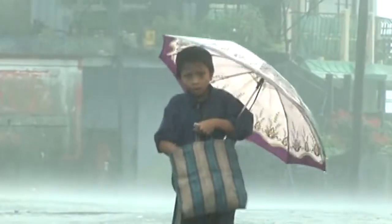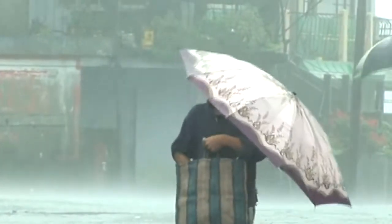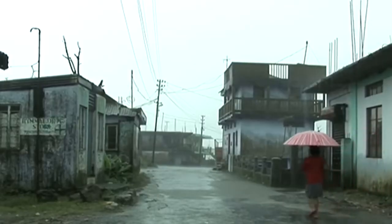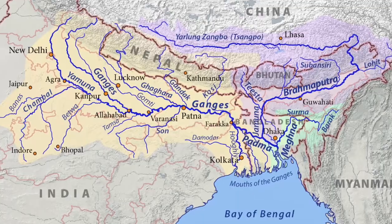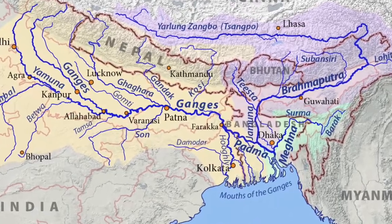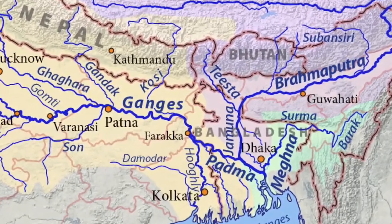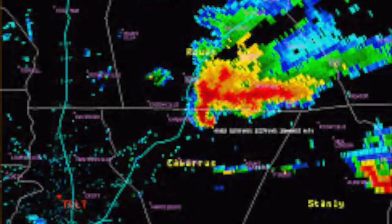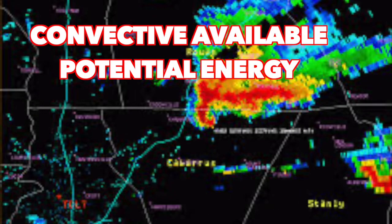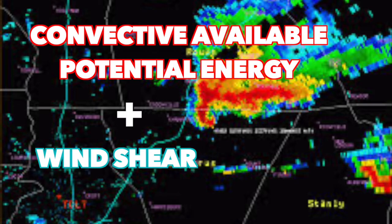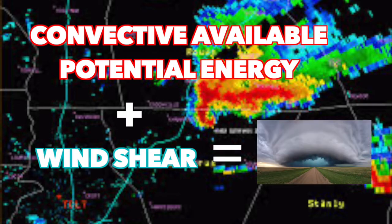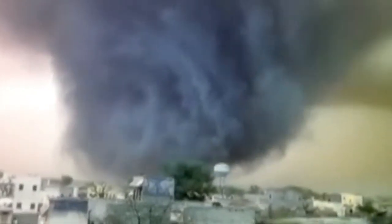Bangladesh is no stranger to extreme weather, as it receives intense monsoons each year. Due to its location in the Ganges Basin, severe thunderstorms are common. This is because convective available potential energy and wind shear produce rotating thunderstorms in this region, making it the breeding ground for the deadliest tornado of all time.